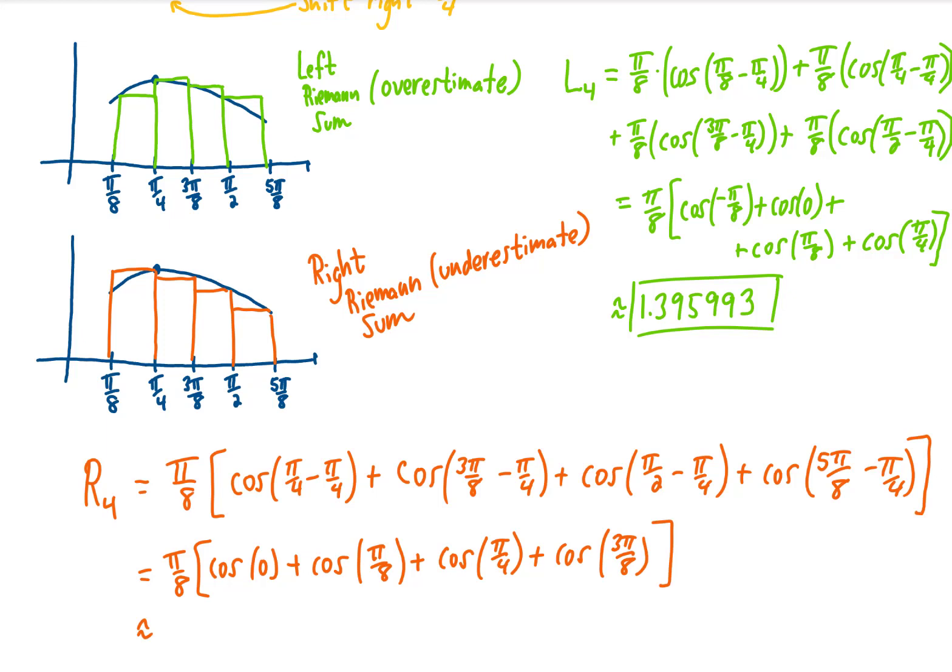Plugging all of those numbers into my calculator gives me approximately this number, and that is rounded to six decimal places as well. So I think that you can see that these answers kind of make sense. We expected this value up here to be an overestimate of the area. We expected this value down here to be an underestimate of the area. So the actual area under this curve between pi over 8 and 5 pi over 8 is somewhere in between these two values.